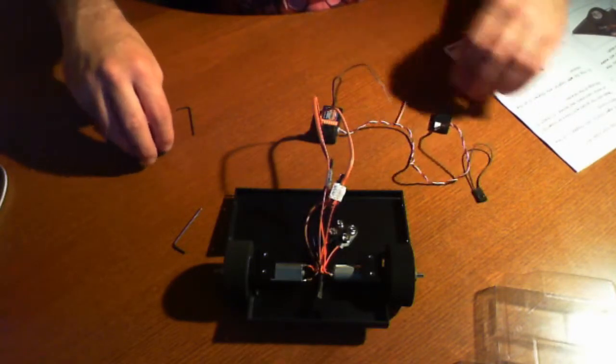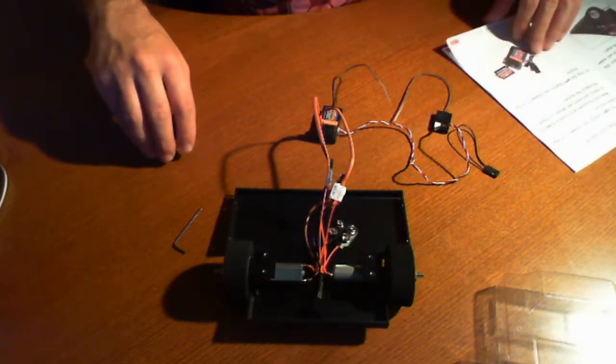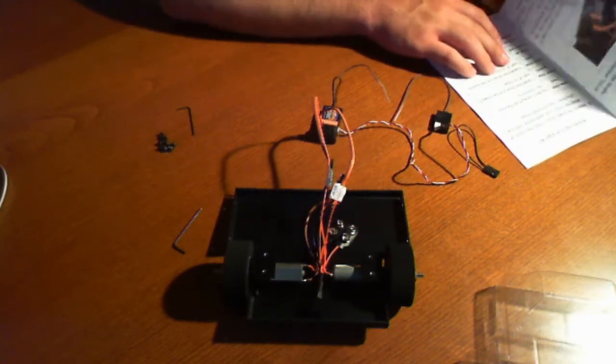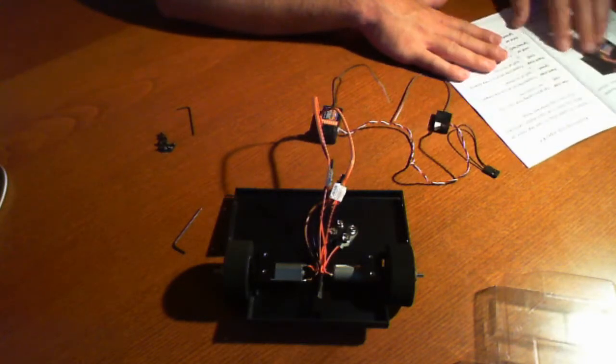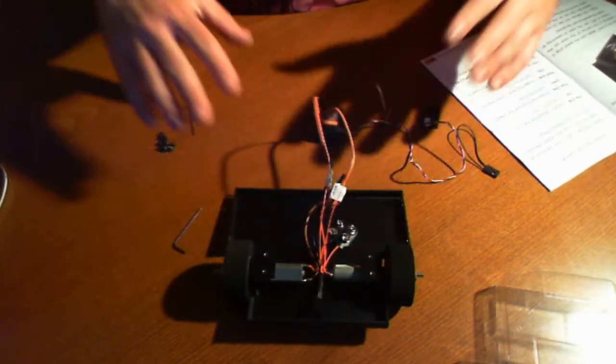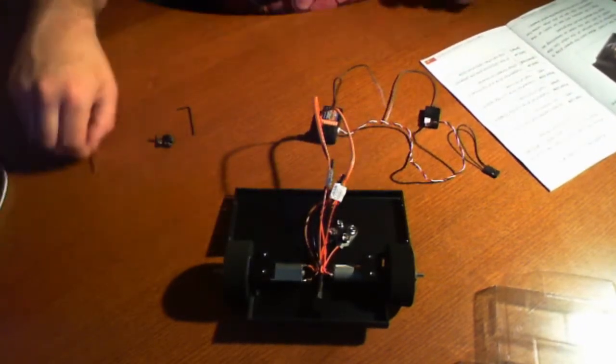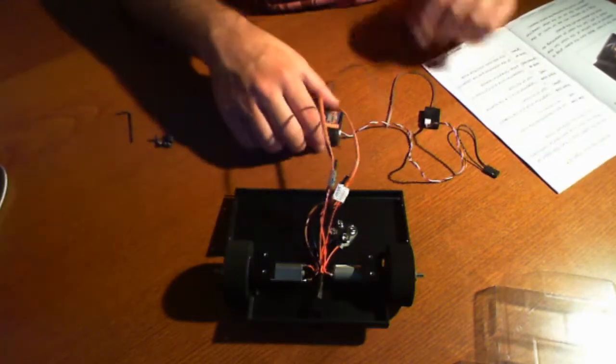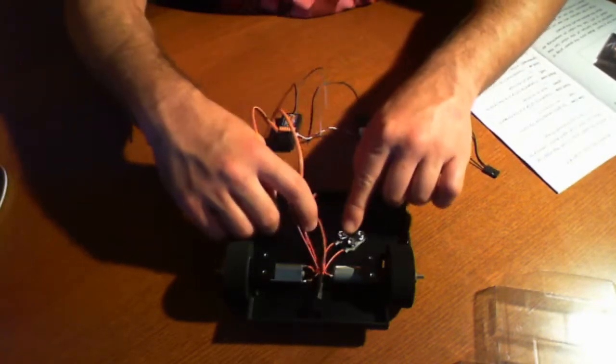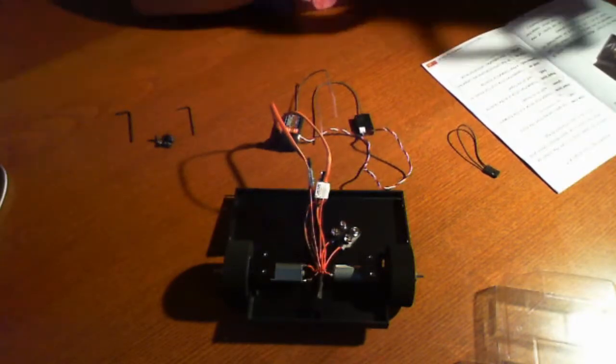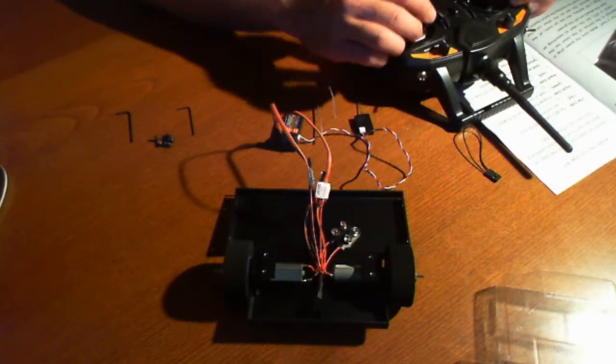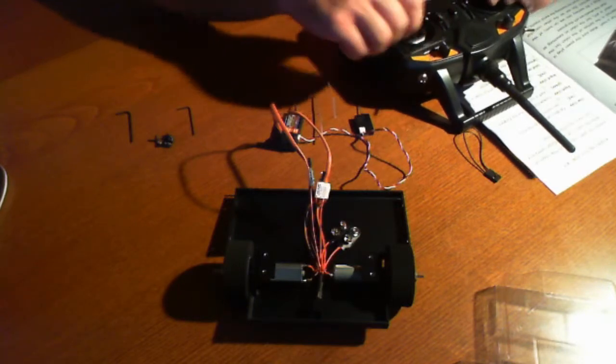Before we actually finish putting it together, what we want to do is we want to go ahead and run a test. The next step is here 17. So 17 basically is mounting everything in place and putting anything in order. What we're going to do is we're going to run a sample test to make sure that everything is working okay before we actually put it all together. So for that, we're going to need two 9-volt batteries and we're going to need to have a receiver ready to go. So give us a second. We'll be back in the next video and we'll have this powered up and we'll have batteries and ready to go.